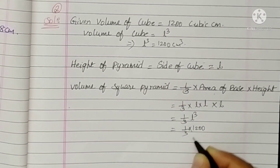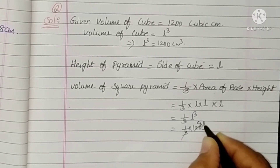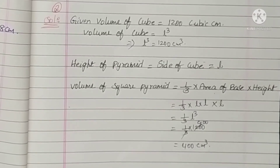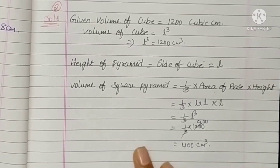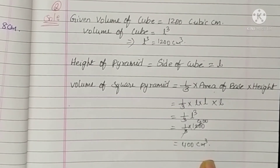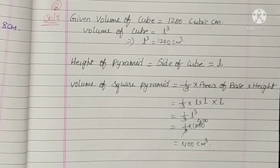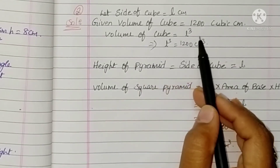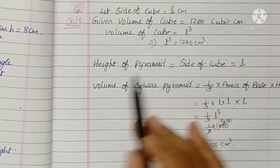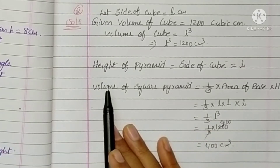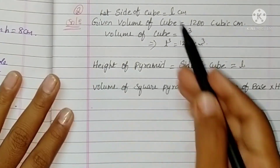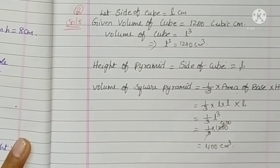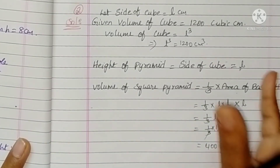So 1 by 3 into 1200 = 400 cubic centimeters. Therefore, the volume of the square pyramid is 400 cubic centimeters.